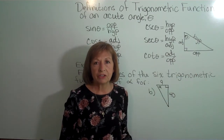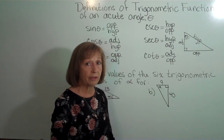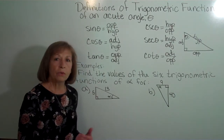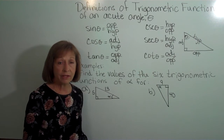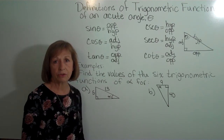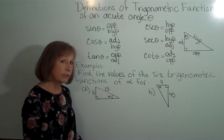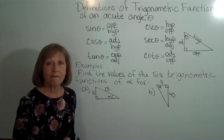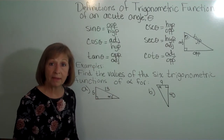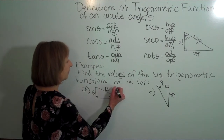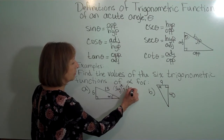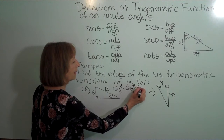That gives us the definitions of our six trigonometric functions of a right triangle. To practice these, we're given examples where we have a right triangle with two of the three sides given and some angle for which we want to find the six trigonometric ratios. So one of our first tasks is to find the missing side length. With a right triangle, remember we have the Pythagorean theorem, which says one leg squared plus the other leg squared equals the hypotenuse squared.